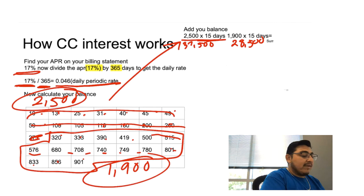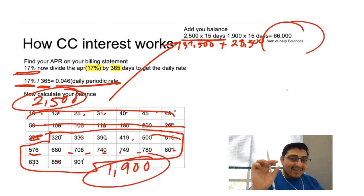Now that we have $37,500, we're going to add that to $28,500, which is going to give us our sum of daily balance, which equals $66,000. Now that we have that number, we can move on to the next step of this equation.